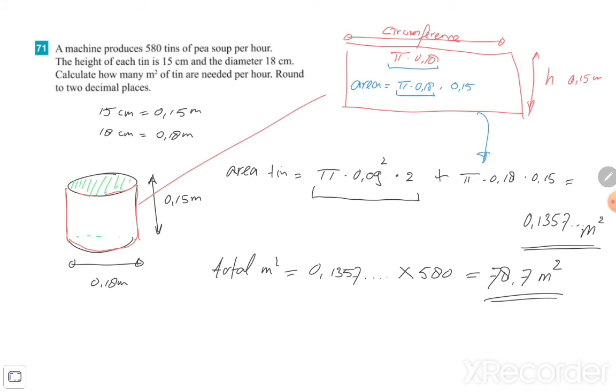And that will be 78.7 square meters. Oh, I'm sorry, I just made a mistake because they want to have the answer in two decimal places. So it's 78.72 square meters.